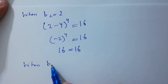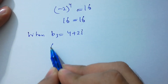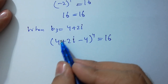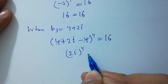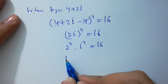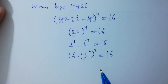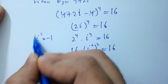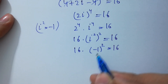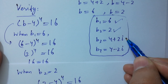When b = 4+2i: substituting into (b-4)⁴ = 16, we get (4+2i-4)⁴ = (2i)⁴ = 2⁴ · i⁴ = 16 · i⁴. Since i⁴ = (i²)² = (-1)² = 1, we get 16 · 1 = 16. So 16 = 16, which confirms that b = 4+2i satisfies the equation.